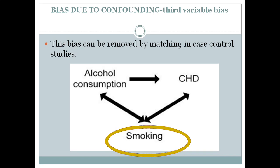The last type is confounding or third variable bias. Suppose we are studying alcohol consumption as the independent variable and congestive heart disease as the outcome. A case-control study may yield an odds ratio of 7, suggesting people who consume alcohol have a seven-times risk of getting the disease.